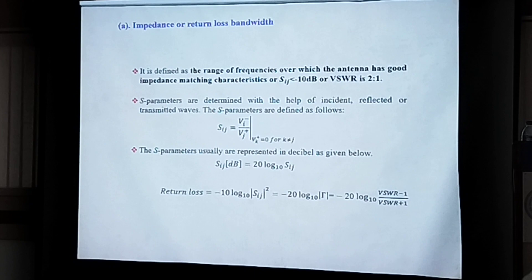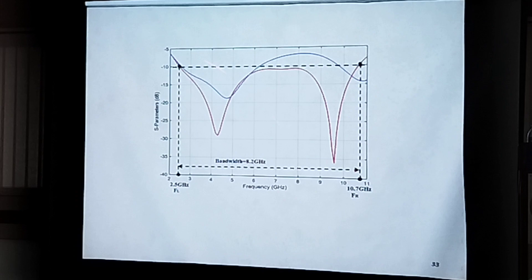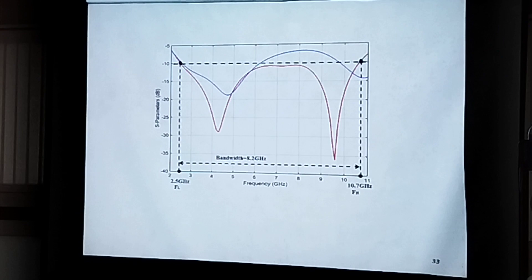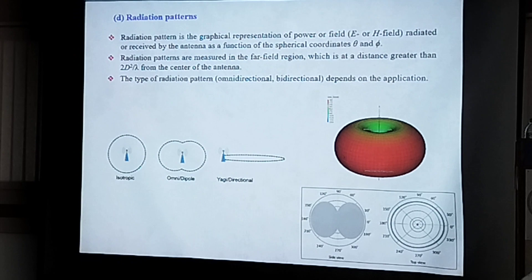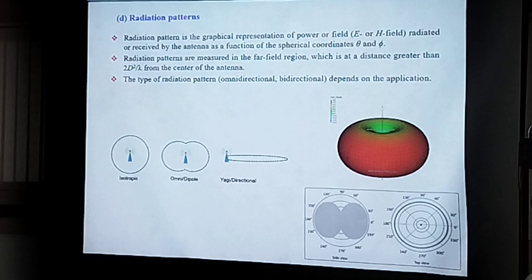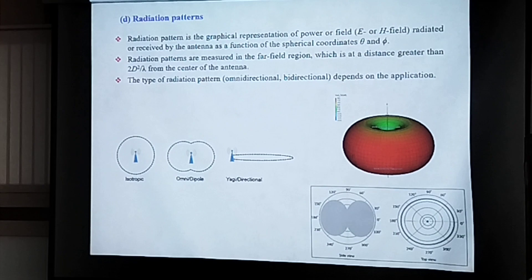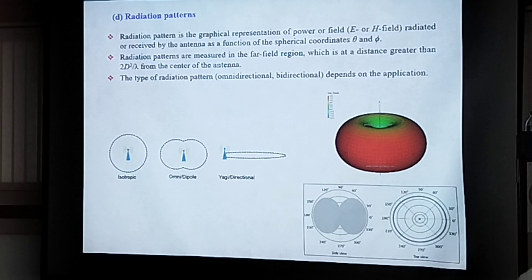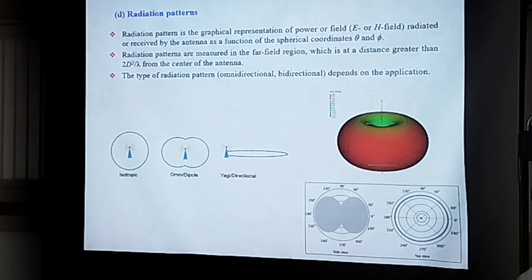This is the graph for return loss — how it looks like in frequency versus the S-parameter in dB. As I said, what type of polarization, what type of antenna, is it directional, highly directional, or omnidirectional radiation pattern required for the particular application? For example, if I want an antenna for a base station application, it is completely highly directional. For Wi-Fi applications, you need an omnidirectional radiation coverage.